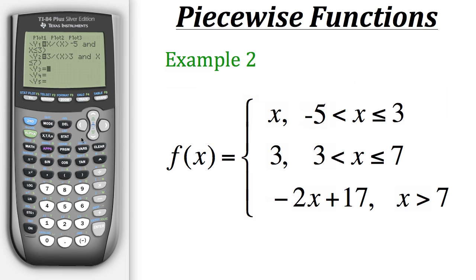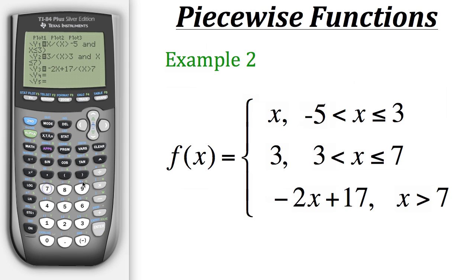Now let's put in the last statement as well before we graph again. We'll put in the expression negative 2x plus 17. Now we want to put in its condition, so we'll start with the parentheses, and then do x is greater than 7, and then close the parentheses. Now let's graph this function. As you notice, it does the rest of our piecewise function with its appropriate conditions. And that's how you graph piecewise functions on your calculator.